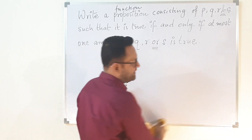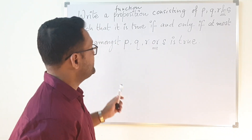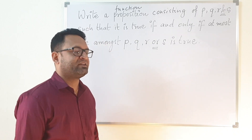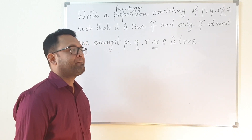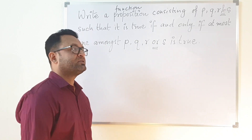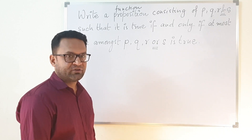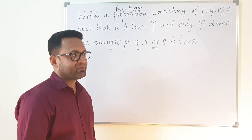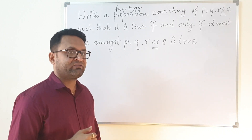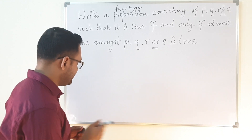You can draw the truth table for P, Q, R and S — it will have 16 rows. You can draw that and check for yourself. But then you have to think carefully about the function and how this function is going to be created.